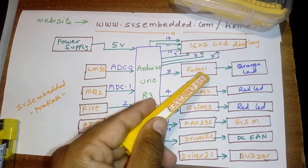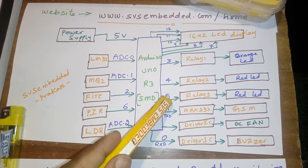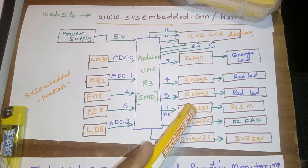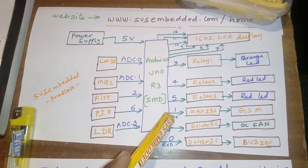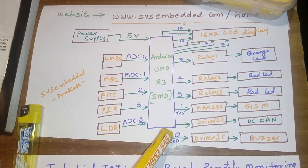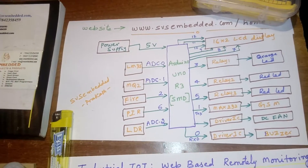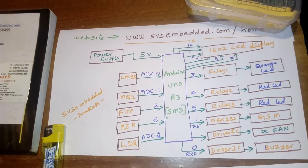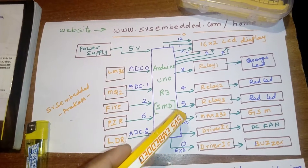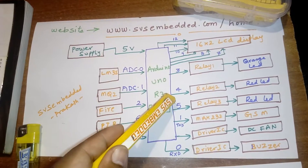Pin 3 is connected with the orange LED. Pin 4 is relay one with orange LED. Pin 4 is relay two with red LED. Pin 5 is relay three with red LED. The MAX232 is connected with pin 1 (TXD pin) to the GSM modem. The driver IC and DC fan are connected with pin 3.